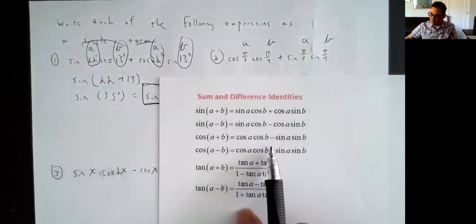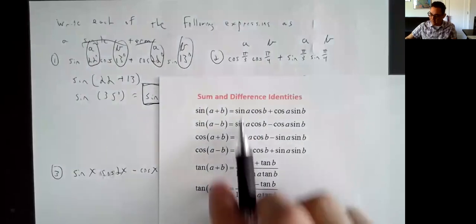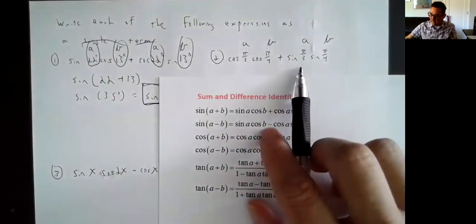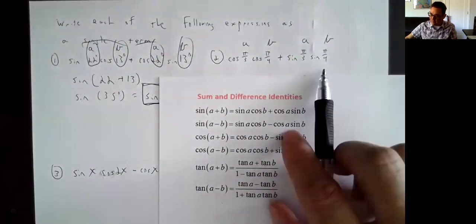So I go down one more. Right here, cosine of A times cosine of B plus sine of some angle A times sine of angle B. This one is my match, and it's the shortcut for cosine of A minus B.